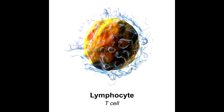Cytotoxic T-cells express CD8 receptors, which recognize MHC1. Helper T-cells express CD4, which recognizes MHC2. One way to remember the MHC and CD pairing is that the product of each pair equals 8: MHC2 × CD4 = 8, and MHC1 × CD8 = 8.